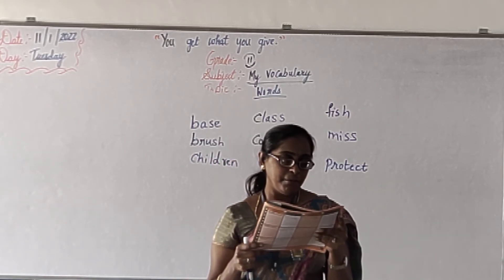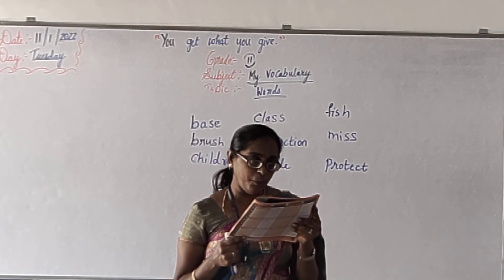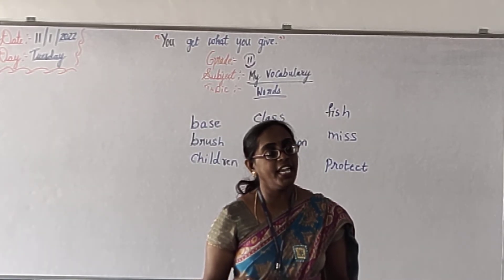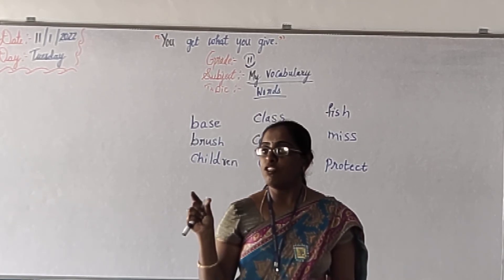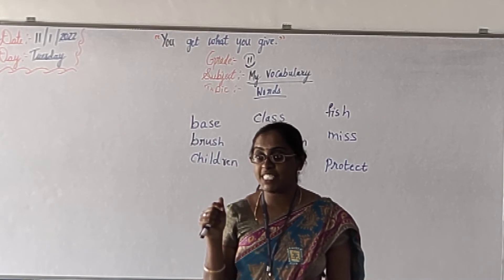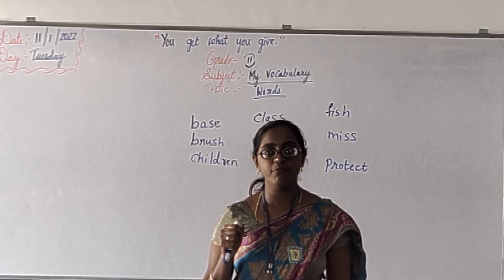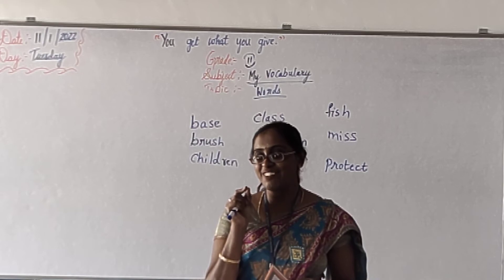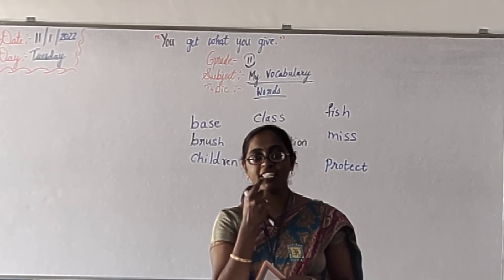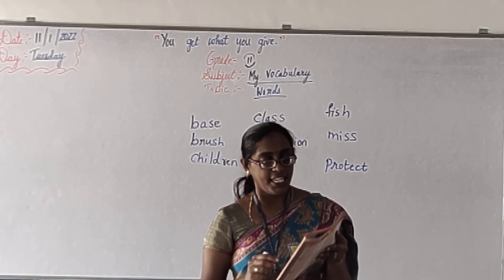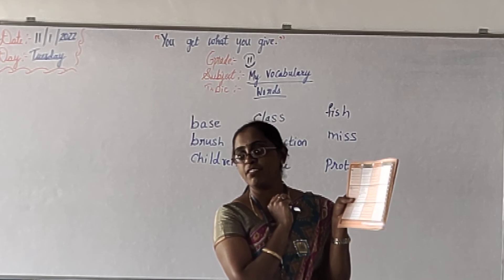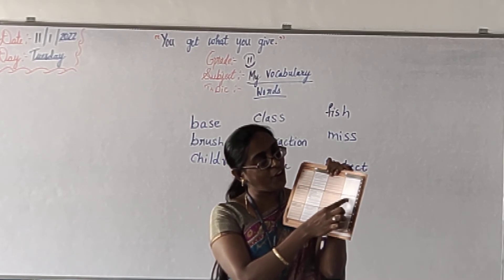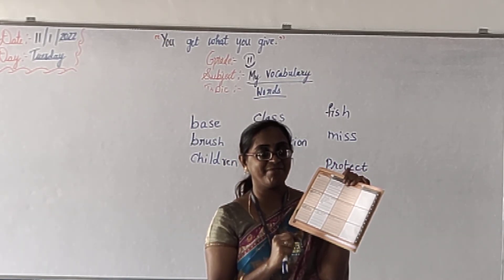Then next we have miss. To be without someone or something — somebody or something not being there. Students are absent right here, so they are missing in the class. Sentence: two of its front teeth were missing. Your teeth can fall — if both teeth are missing, they have fallen down. Write 'missed' here, and draw teeth showing that one is missing.